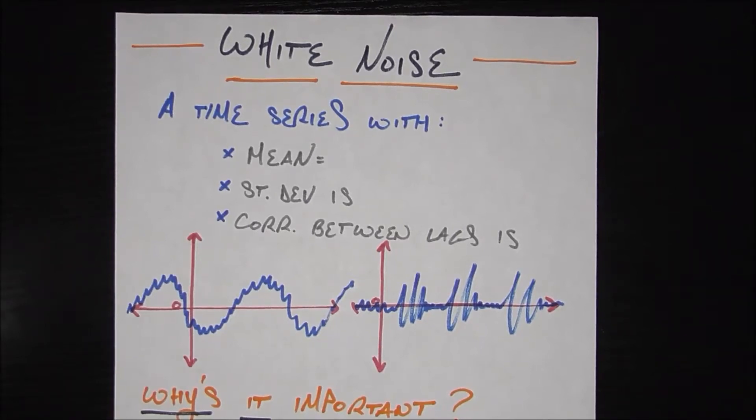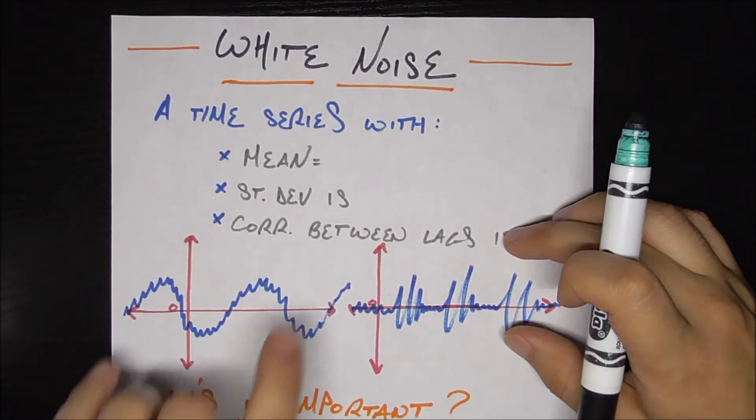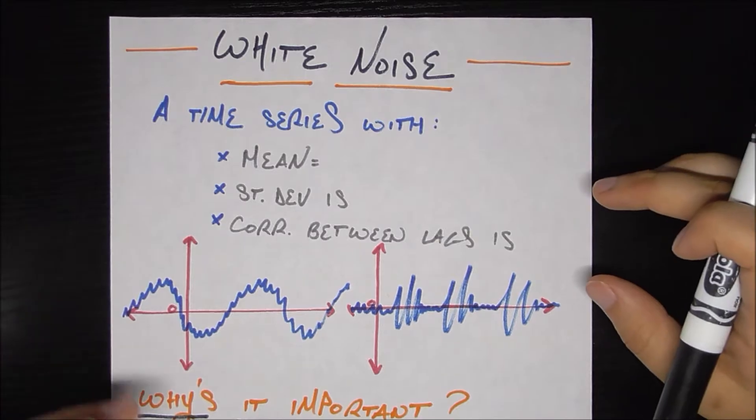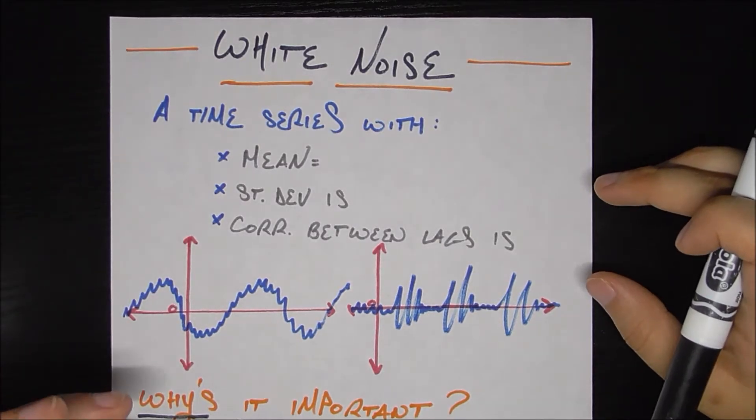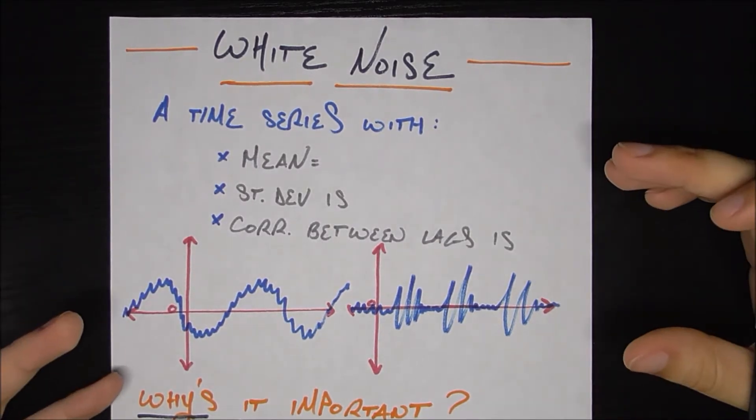In this video we'll be talking about a time series concept called white noise. White noise ends up being really important to time series because it answers the crucial question of when should I stop fitting my model.